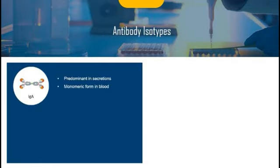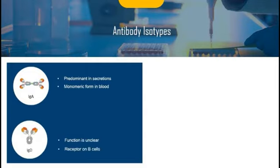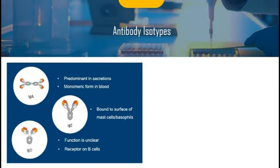Human IgA is the predominant class of antibody in extravascular secretions. It is in monomer form in blood. The J-chain is a 15 kDa polypeptide consisting of 129 amino acid residues and one carbohydrate group. The J-chain connects two similar conventional antibodies to constitute a dimeric IgA. IgD is an antibody whose function remains unknown, even though it is one of the main receptors on mature B cells. IgE binds through its Fc part to mast cells or basophils, and protects against parasites by releasing mediators that attract eosinophils.